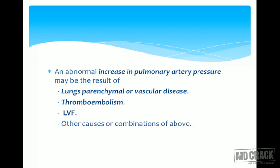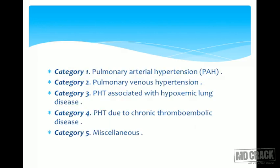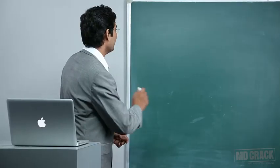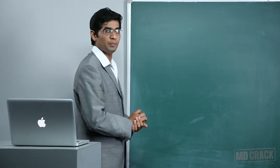It can also be a combination of all three. When we say pulmonary hypertension, it is common practice for most doctors to treat all patients equally — just prescribing sildenafil or bosentan. This is a wrong practice. We should divide every patient of pulmonary hypertension into five categories.